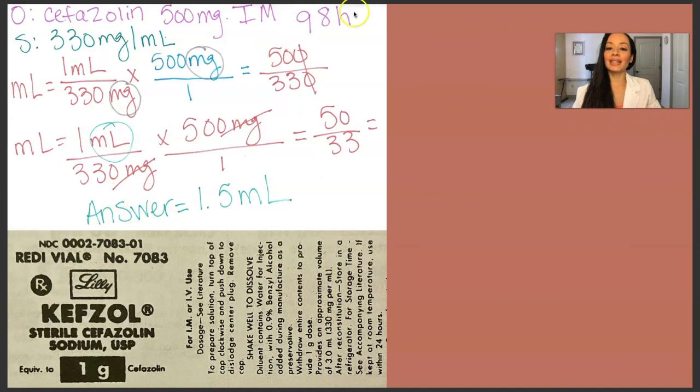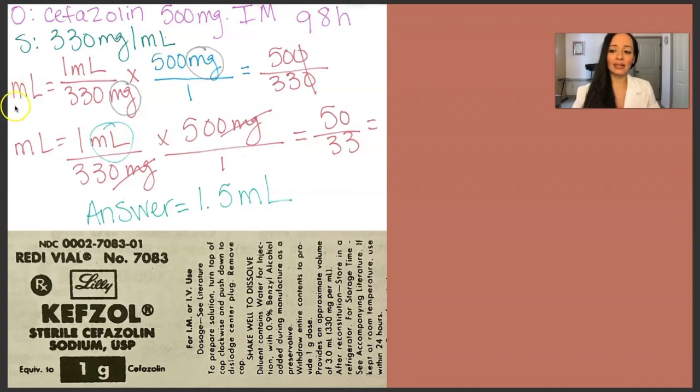Again, when we're giving something IM, we need to know, we need to find the milliliters of it because we're injecting a liquid. We need to know the volume that is our unit of measurement. So when you're doing dimensional analysis, you write down the unit of measurement you need it to be in the final step. So it's milliliters. That's what we're looking for.